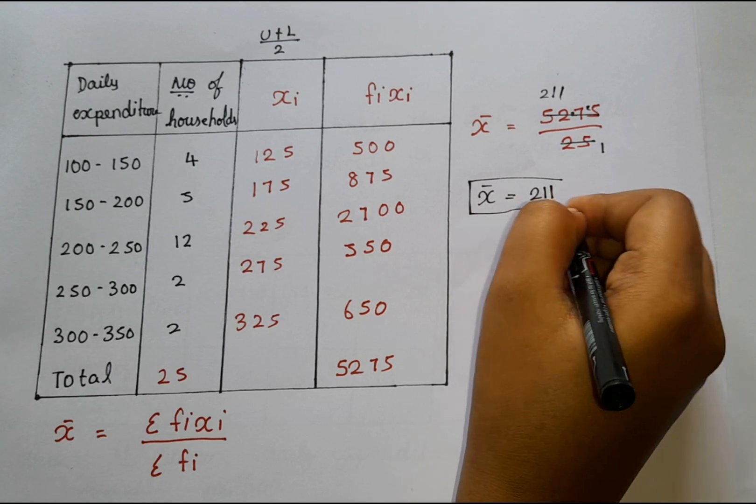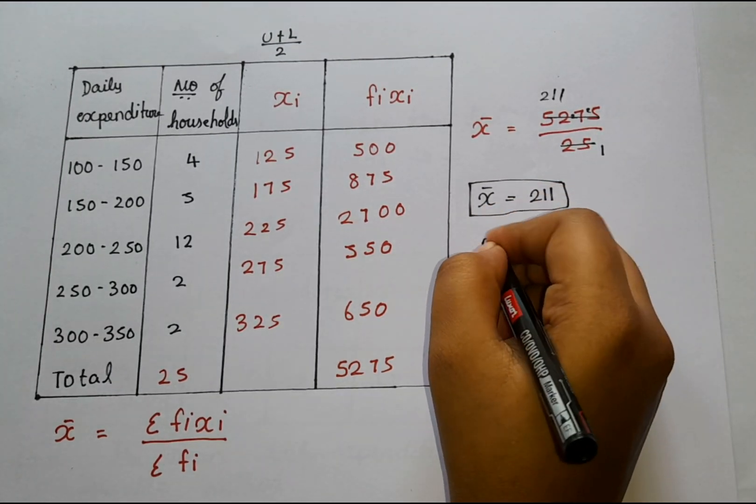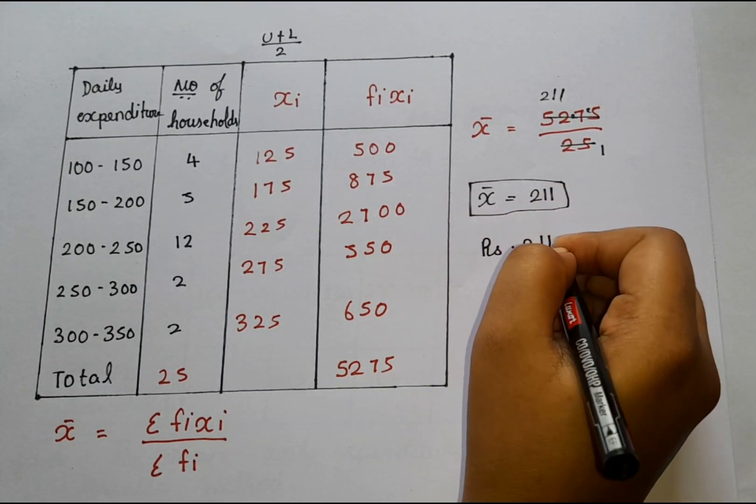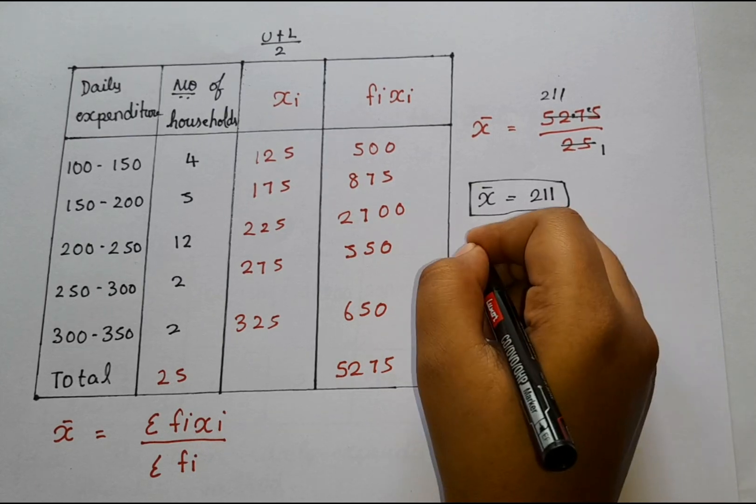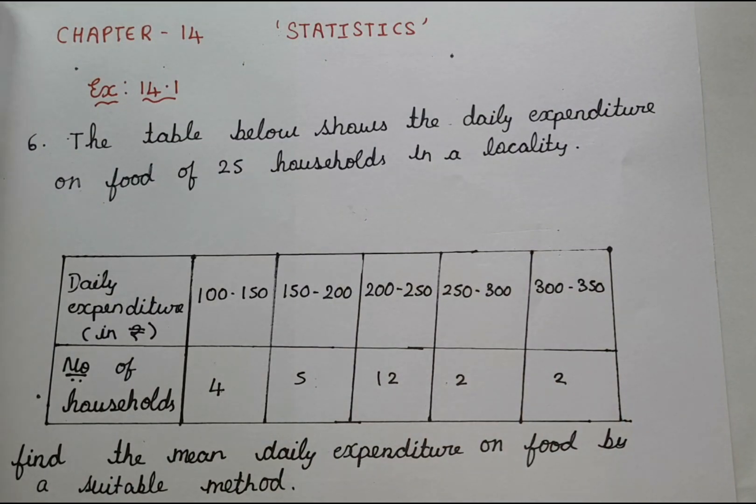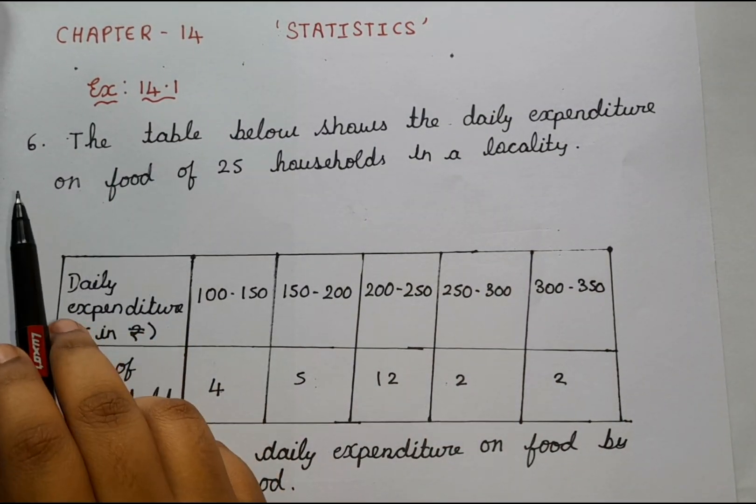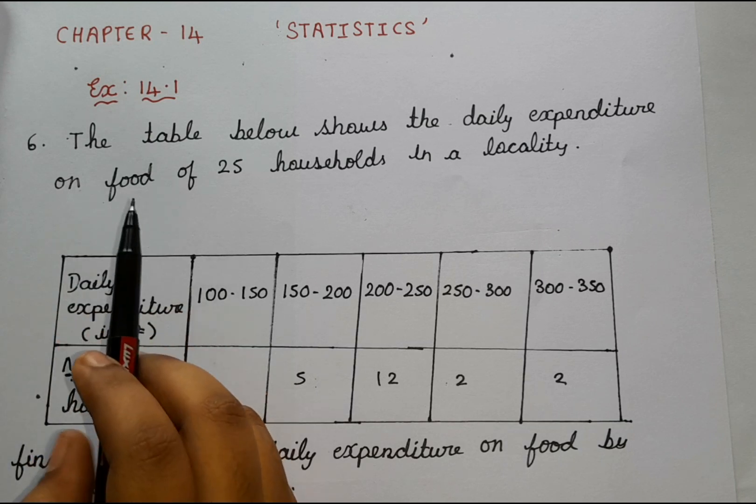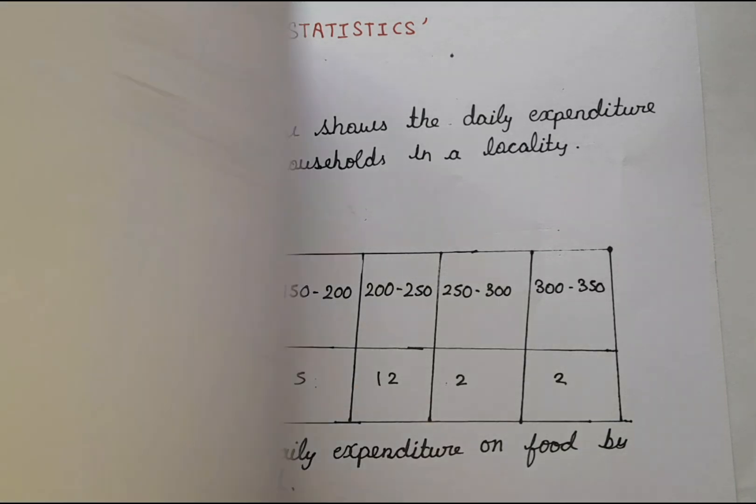So finally we got X bar value was 211. So what is the meaning of this X bar value? Here totally they are spending rupees 211. So in the locality they are spending this much rupees for buying the food. They were spending rupees 211 for buying food in the locality. This is the answer.